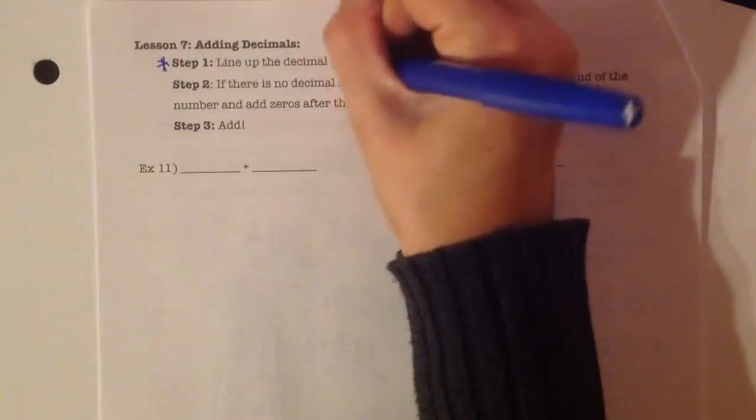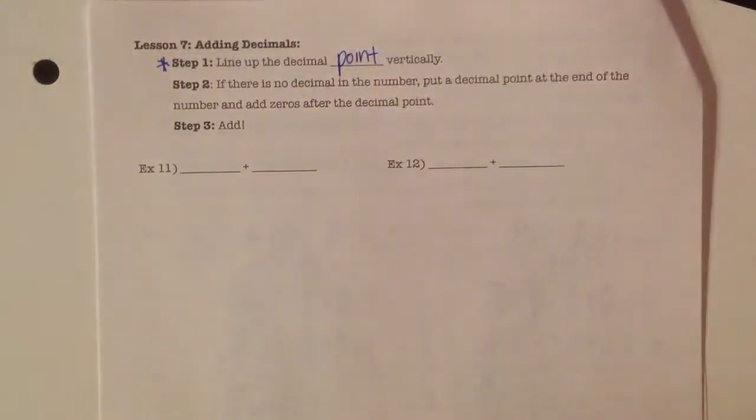The important part is that we have to line up those decimal points. We have to line the decimal points up vertically. If there's no decimal in the number, put one at the end of the number and add zeros after the decimal point if necessary, and then just add.